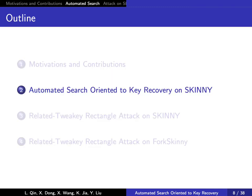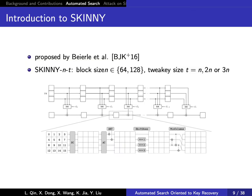Second, automated search oriented to key recovery on Skinny. At CRYPTO 2016, Beierle et al. proposed a new lightweight block cipher family, Skinny. It has comparable hardware-software performance with SIMON, and also has much stronger security guarantees. Skinny follows an SPN structure and a tweakey framework.